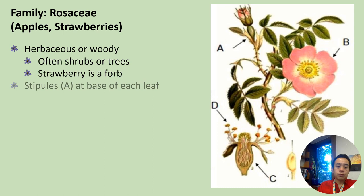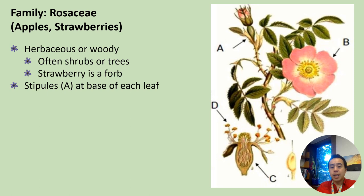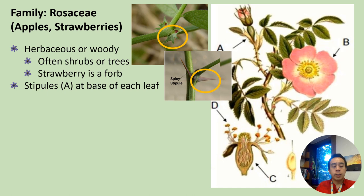Oftentimes Rosaceae plants have stipules at the base of each leaf along the stem. A stipule is essentially a small leaf-like appendage which typically comes in pairs at the base of the leaf stalk, or where the petiole meets the stem on a plant. You can see where it's pointing here on this rose plant. Here are also a couple of other examples of stipules, including a spiny type which is a modified stipule — stipules generally are modified leaves.